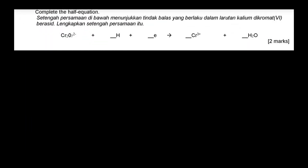Next, complete the half equation: dichromate(VI) ion converts to chromium ion. First, memorize the dichromate(VI) ion formula: Cr₂O₇²⁻. It converts to chromium ion, Cr³⁺. Write these two ions first. On the right side you don't have oxygen, but on the left you do, so add water to the side without oxygen. On the left side you don't have hydrogen, so add hydrogen ions.